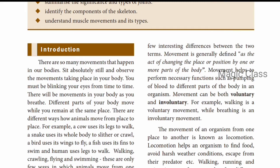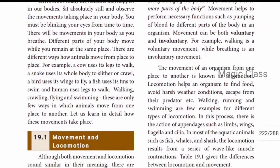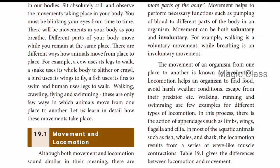Animals like a cow make use of their legs. A snake moves using its whole body. A bird will flap its wings and fly. Fish make use of fins to move in water. Humans use their legs to walk. Walking, crawling, flying, and swimming are the main ways in which animals move from one place to another.